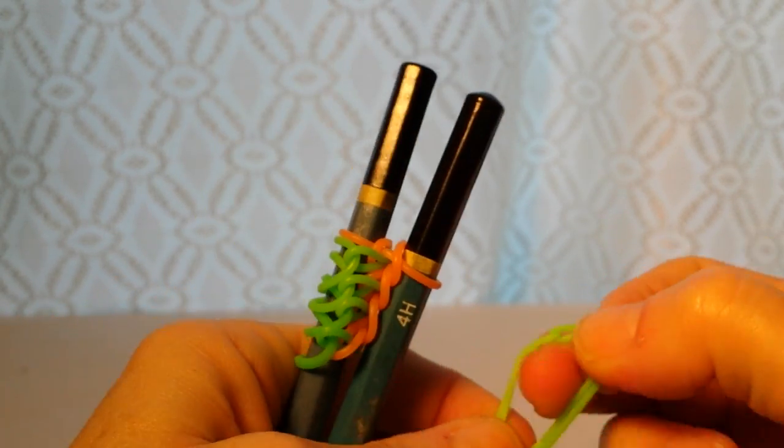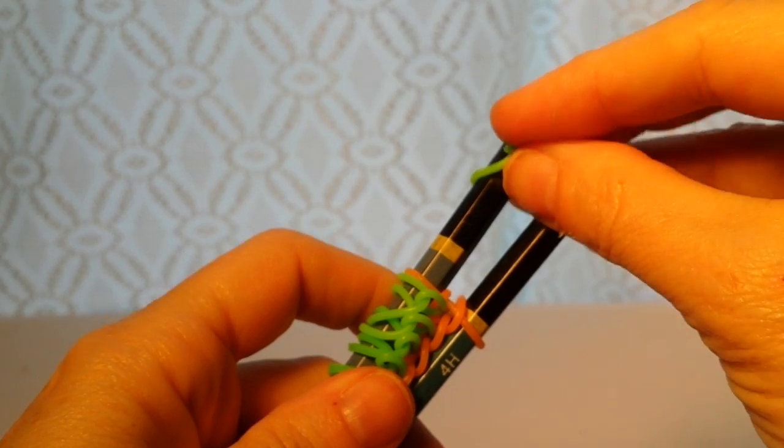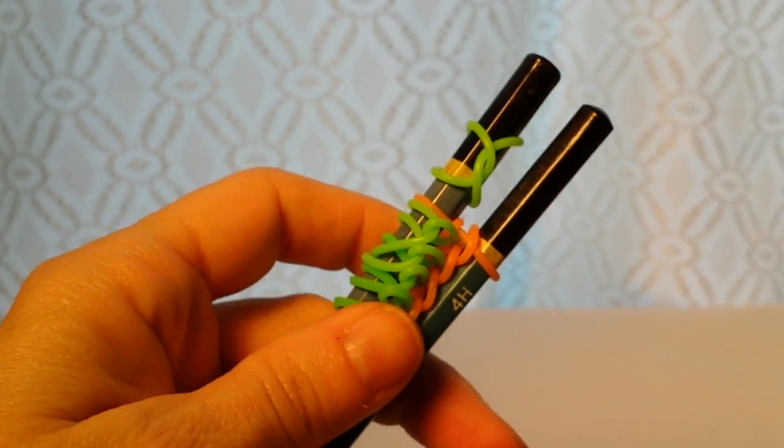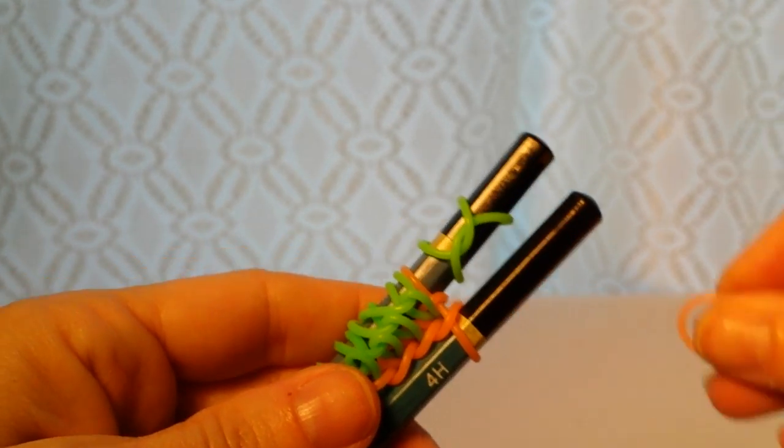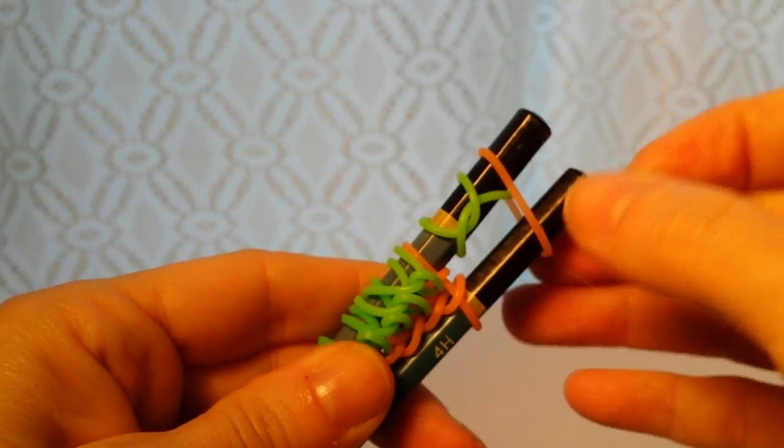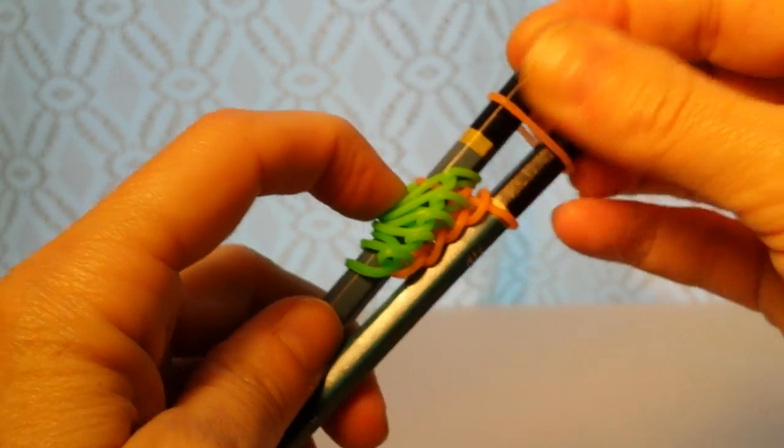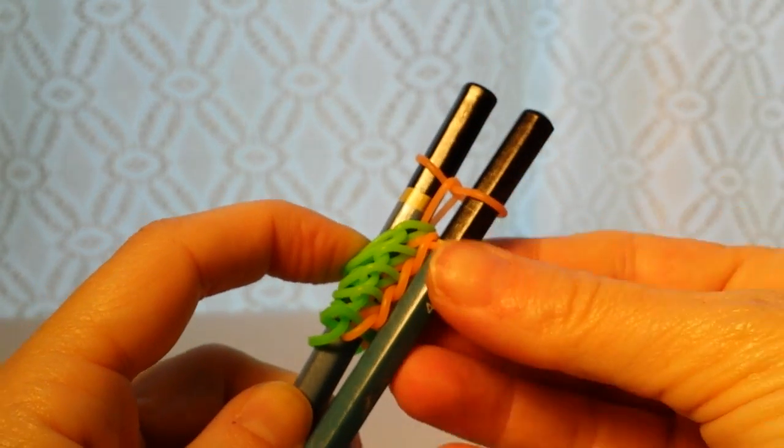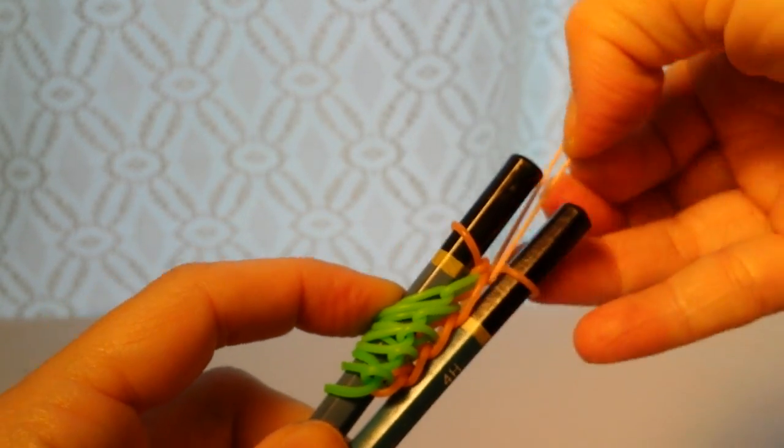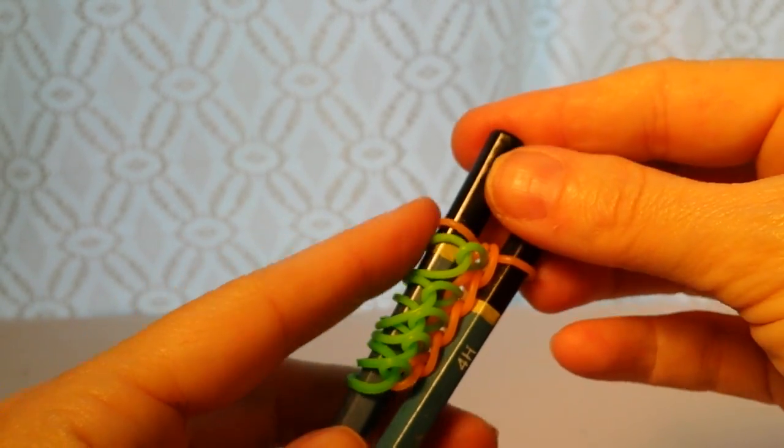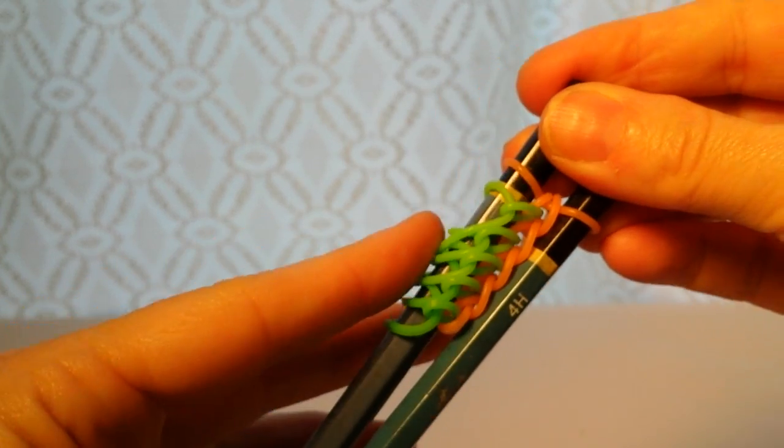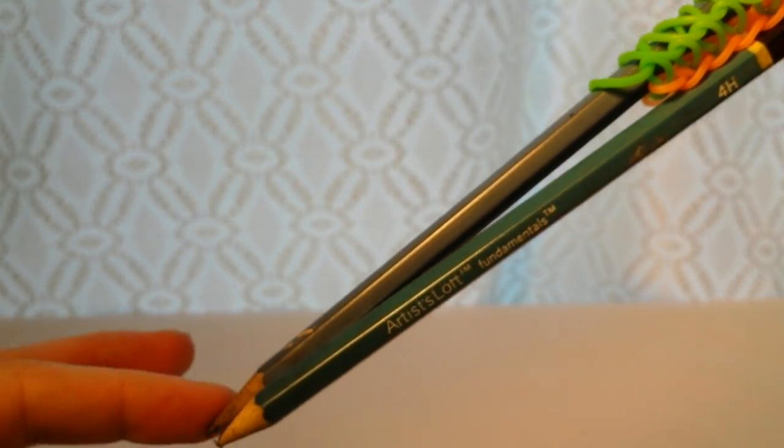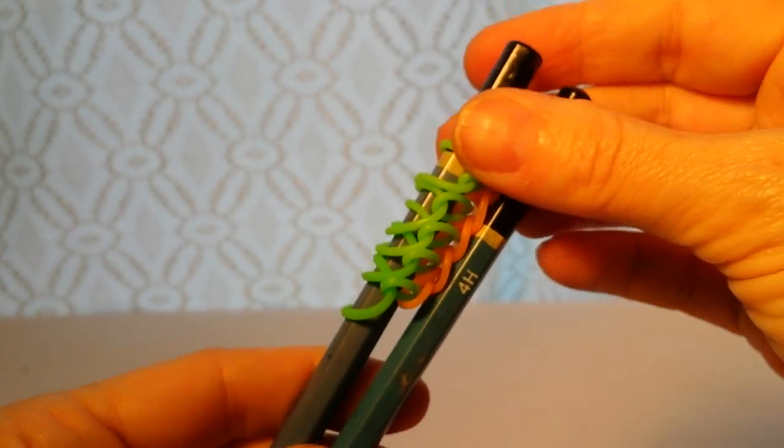Fold them in half, put them over one pencil, put your next one on, push it down past your second color, pull it up over to the middle, up over to the middle. So you are going to keep going in this pattern. Like I said, it is going to slowly go down your pencil. It will eventually come off the end of your pencil. That is okay.